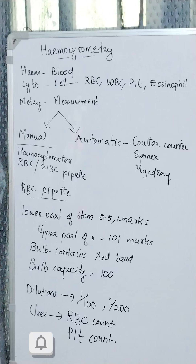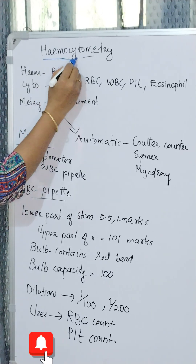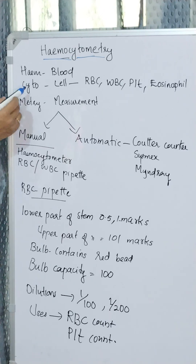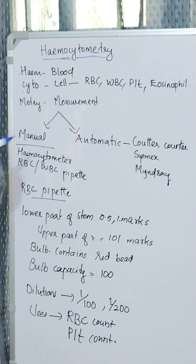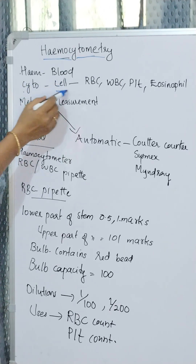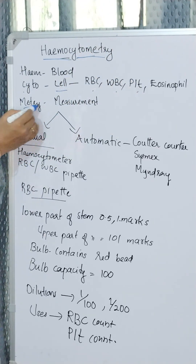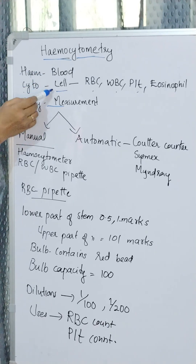Let us start Hemocytometry, where 'heme' means blood and 'cyto' means cell. The cells include RBC, WBC, platelet, and eosinophil. The term 'metry' means measurement, so hemocytometry means blood cell measurement.